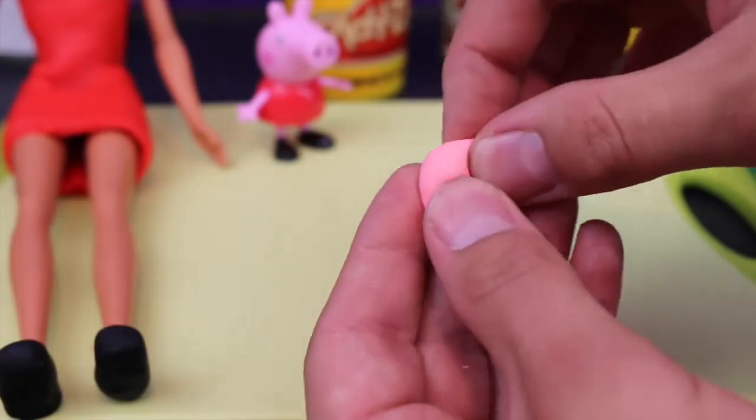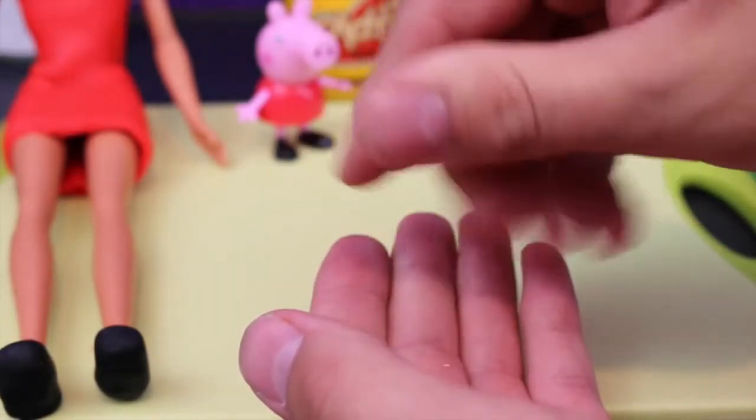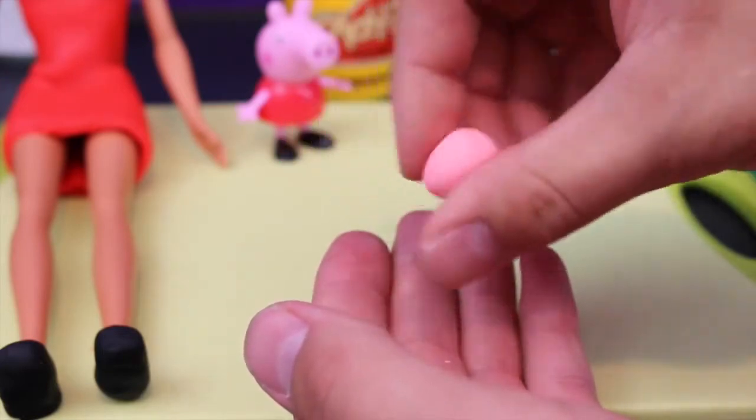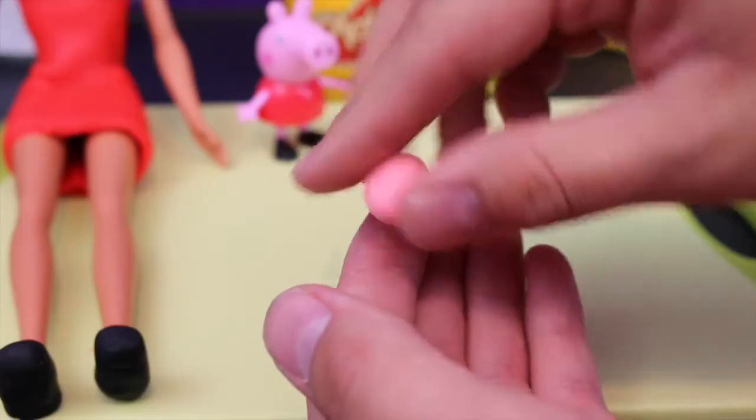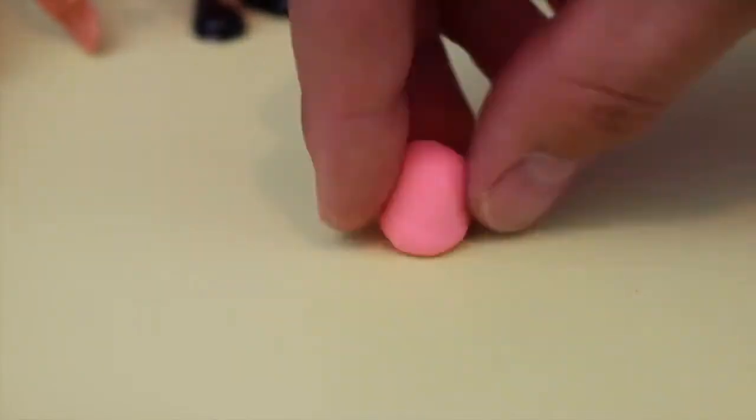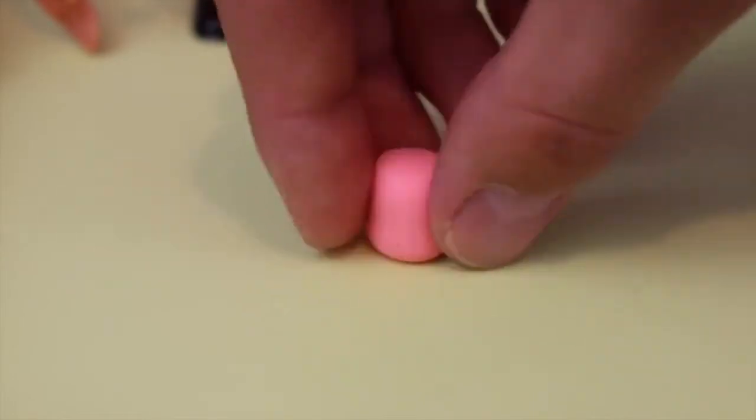All right and to make the pig snout we just need some light pink Play-Doh and what I'm gonna do is mold it nice round shape and we're gonna make it into like a cylinder kind of like the shape of a can with two flat tops and a round side. So we're just gonna roll it out and after making it really nice and round we're gonna make the top and the bottom kind of flat.